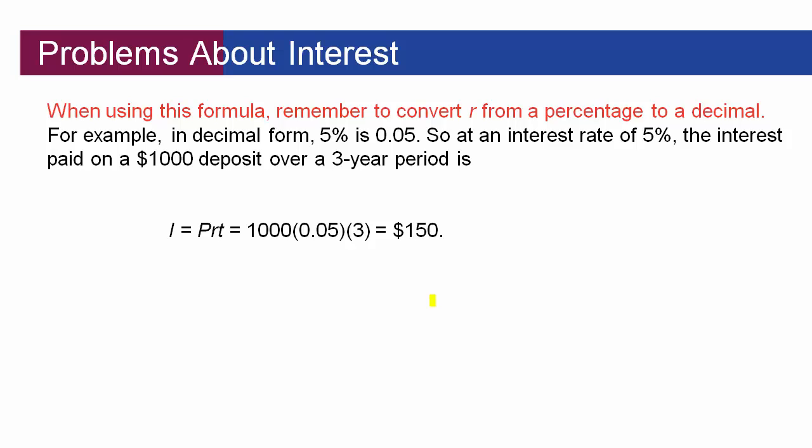So remember whenever you see an R anywhere in a formula in finance that represents rate, a 5% rate or a 3% rate, R is always written as a decimal. So 5% always becomes 0.05, 3% would become 0.03, 2.5% would be 0.025 and so on and so forth.